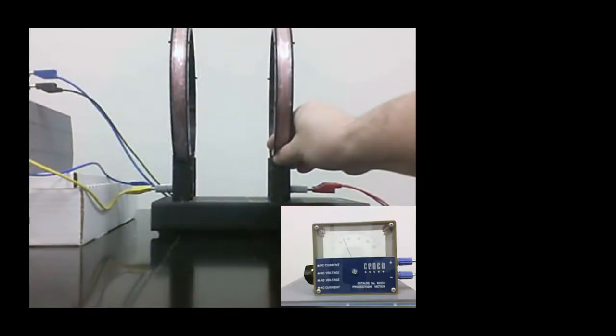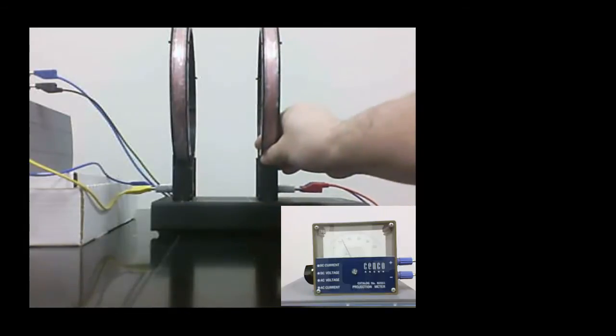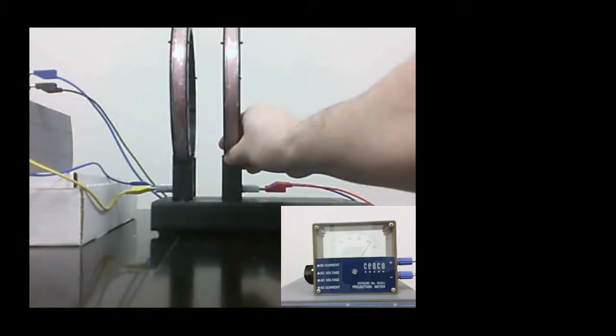We will now adjust the distance of the secondary coil to the primary coil and watch what happens to the induced current.